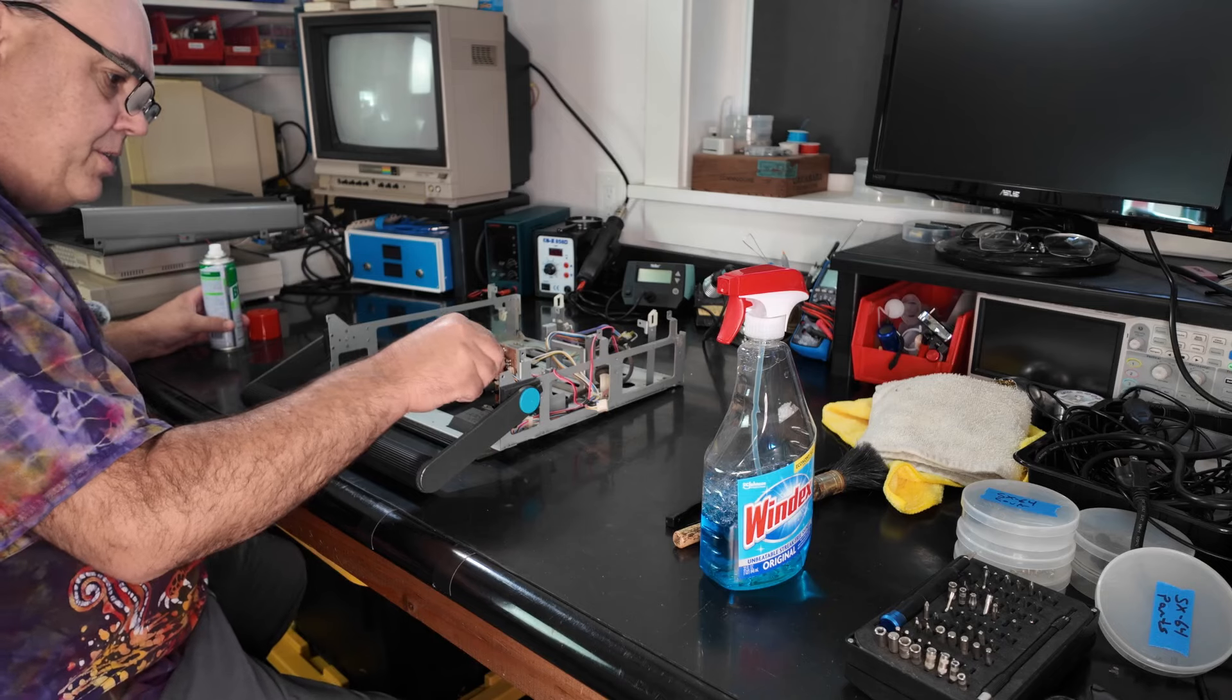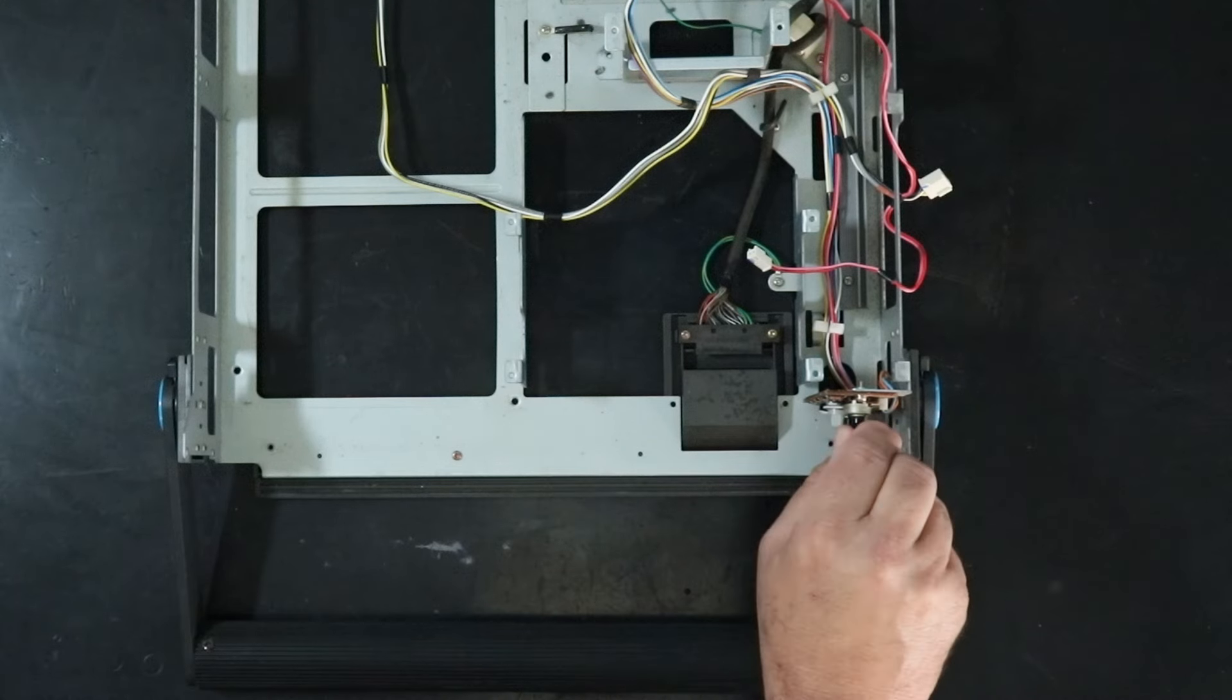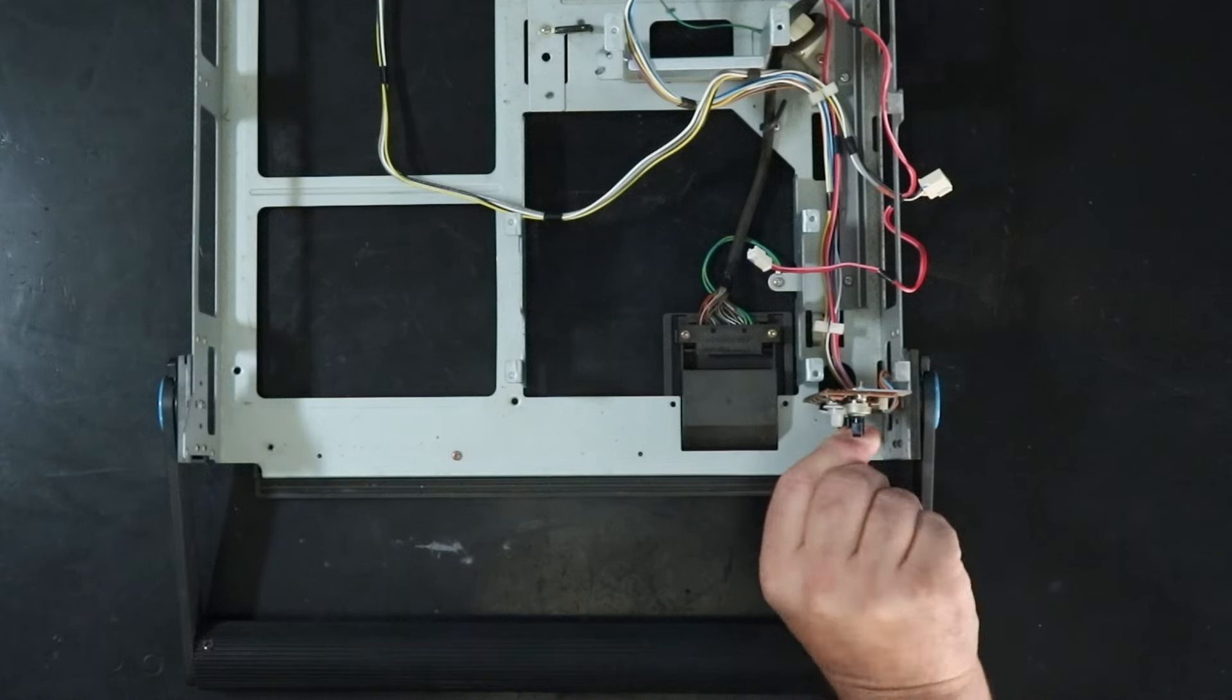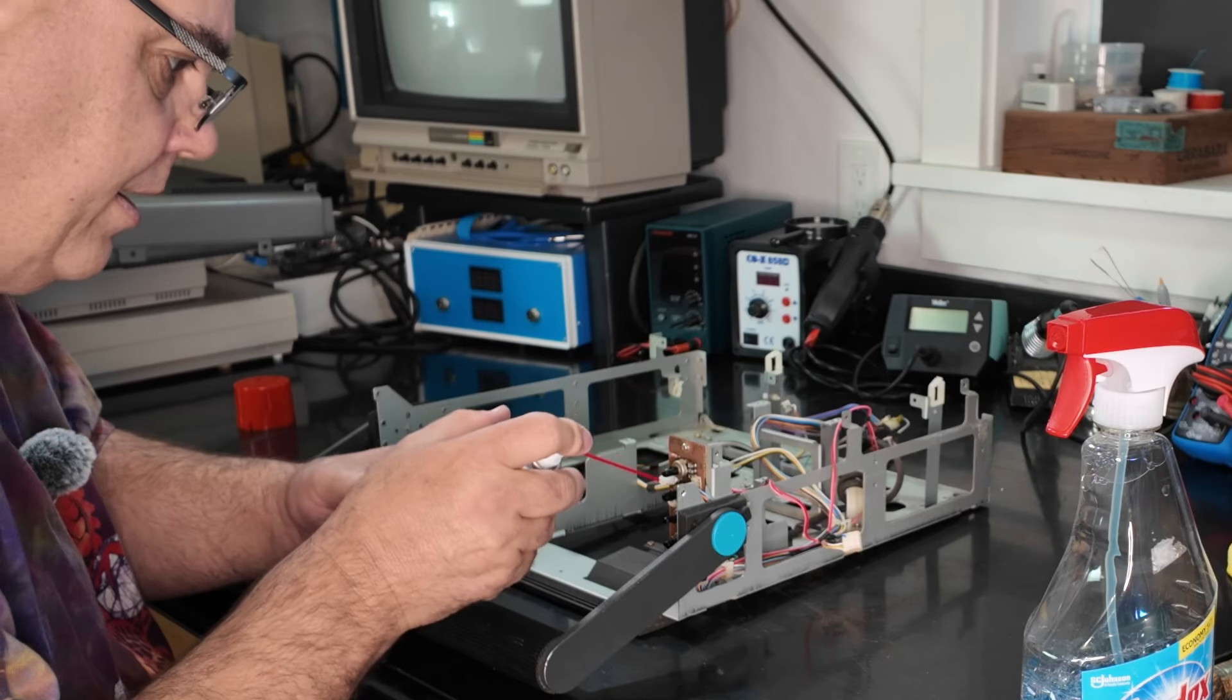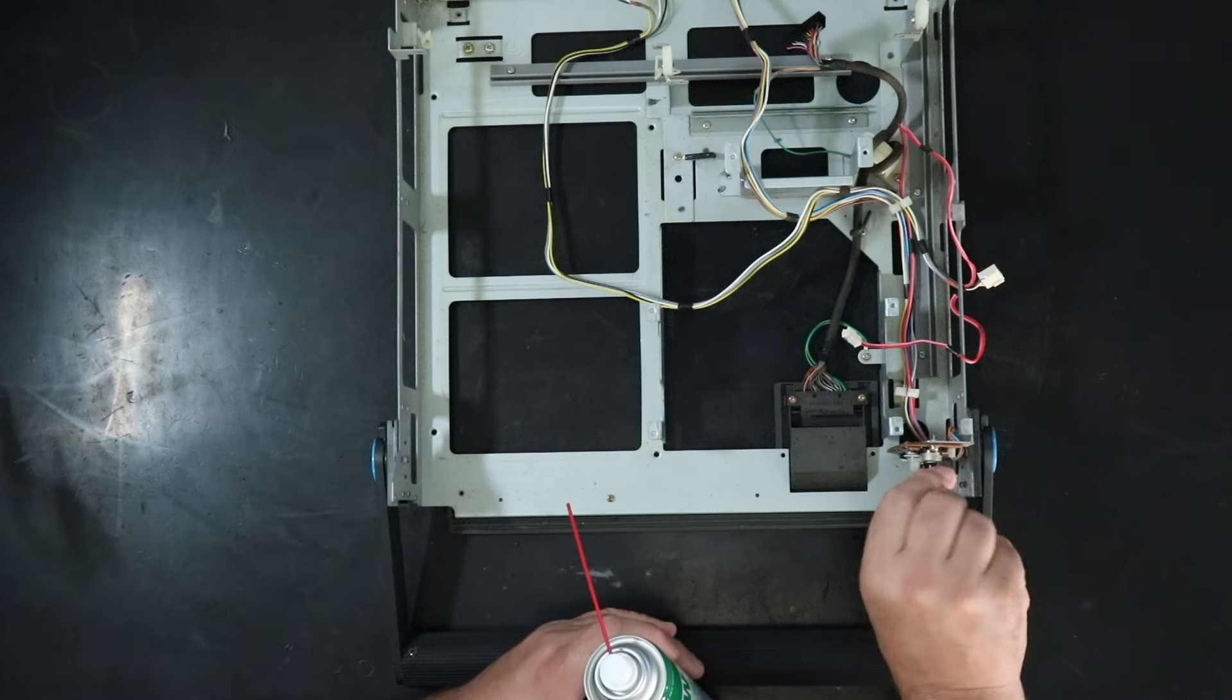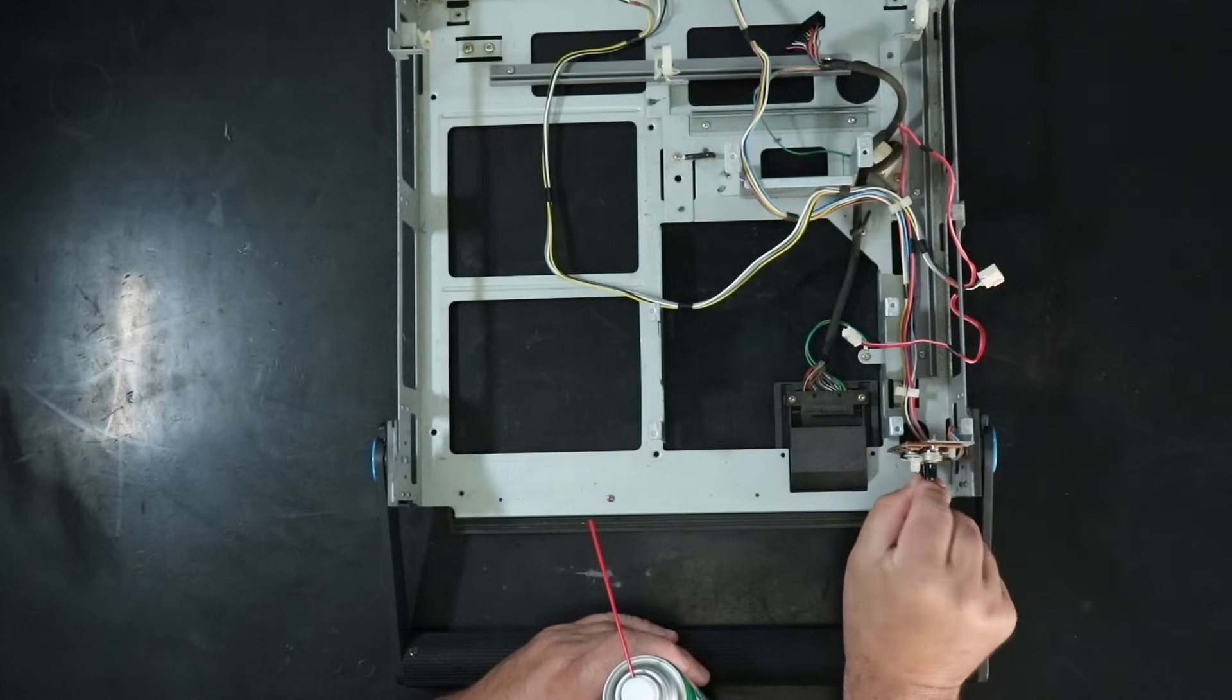I'll also start out by hitting all the controls with some contact cleaner. I prefer BW100 contact cleaner instead of deoxid because it doesn't leave a residue behind. I don't think deoxid would cause any problems, but I do know there are some Tektronix oscilloscopes out there with knobs that can be badly damaged by it. So better safe than sorry.